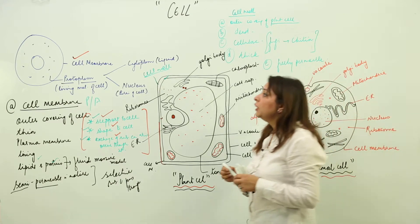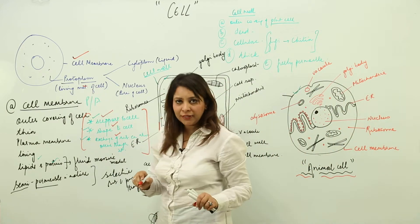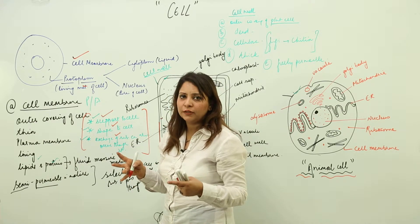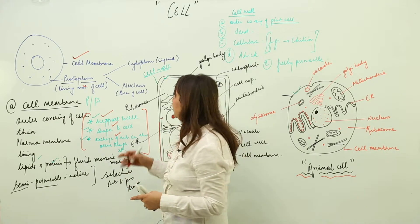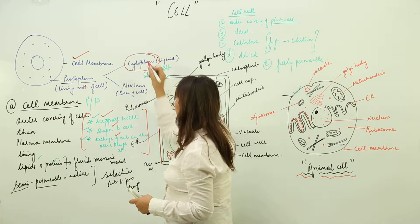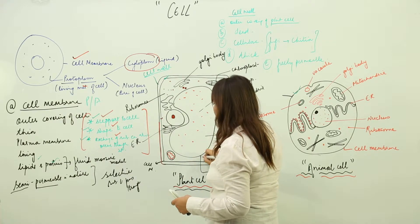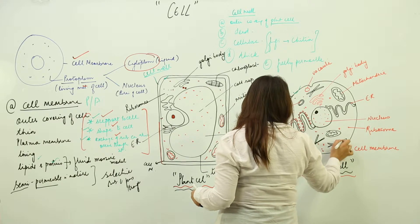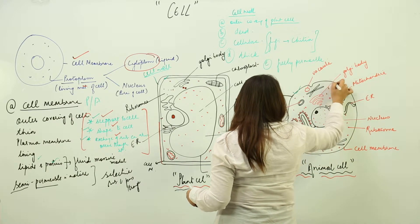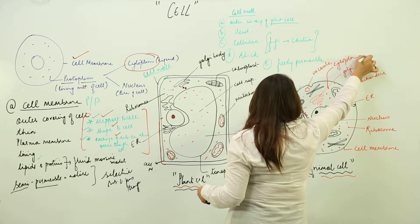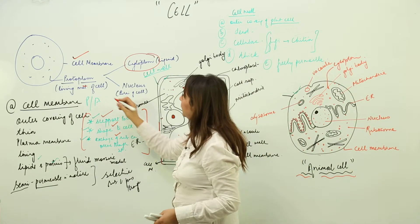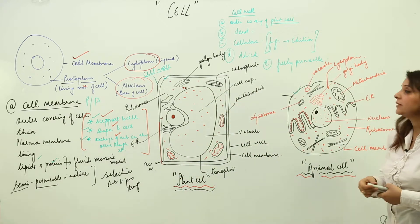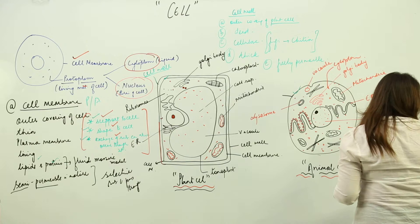Moving on to protoplasm: it is the living material and is classified into two components. The liquid part present within the cell is called cytoplasm — all the fluid material inside the cell is cytoplasm. Now coming to the nucleus, called the brain of the cell.